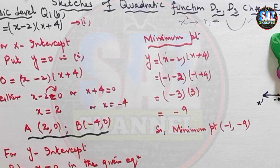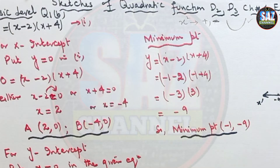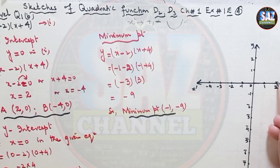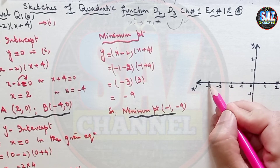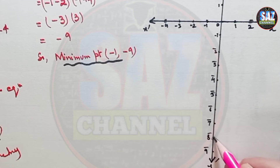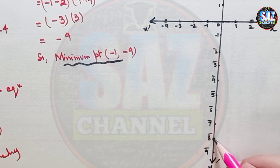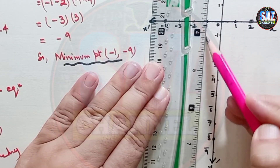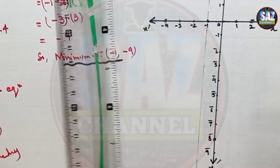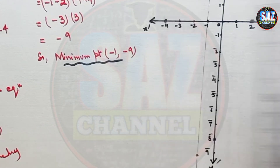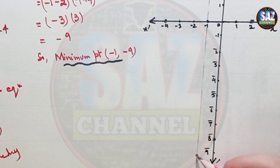We have solved for all the key points and now it's time to plot them on the graph and sketch the curve. First, mark the x-intercepts at (2, 0) and (−4, 0). Then mark the y-intercept. The minimum point is (−1, −9) and the line of symmetry is at x equals minus 1. Let me draw the line of symmetry here and mark the minimum point. Now join all these points with a smooth curve.